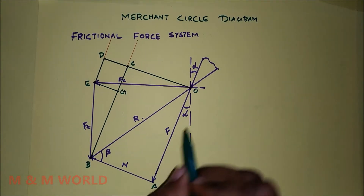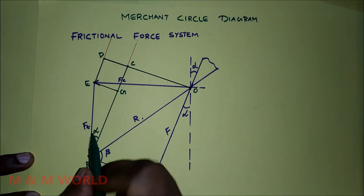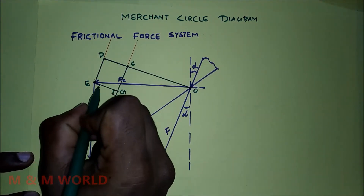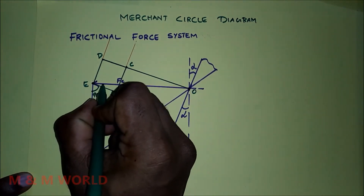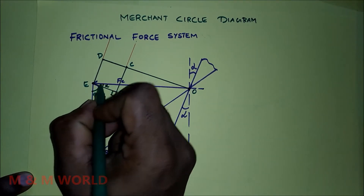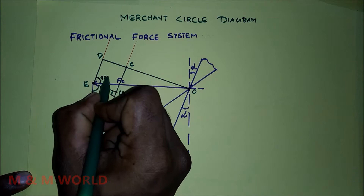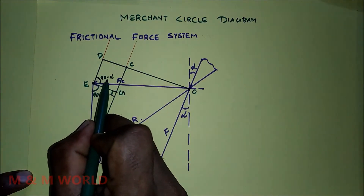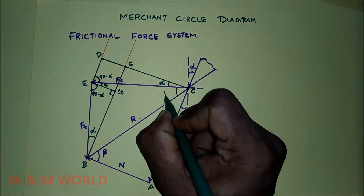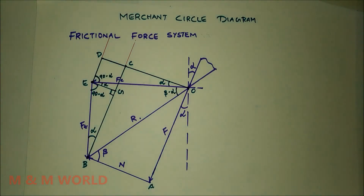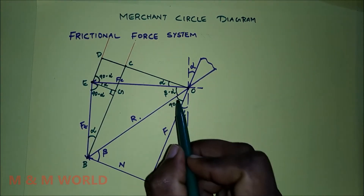Now we can mark the angles. This is alpha. So this angle will be alpha. If this is alpha and this is 90, then this will be 90 minus alpha. If this is 90 minus alpha, this angle will be alpha. This is 90, so this will be alpha. And this is 90, so this angle will be 90 minus alpha, and this angle will be alpha. And we know that this angle is beta minus alpha, since this is 90 minus beta. So we have derived this from the Merchant circle diagram.